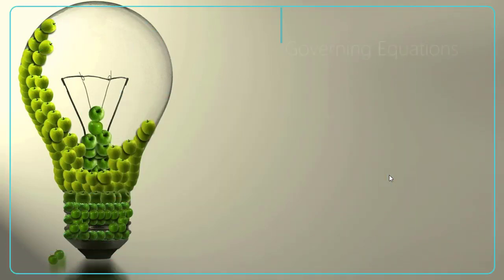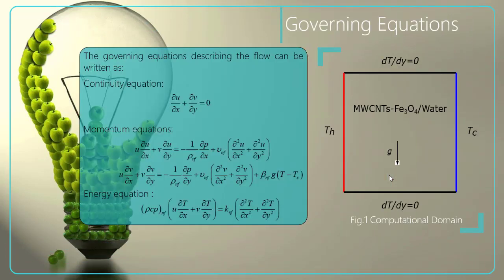Figure one presents the configuration. The enclosure was subjected to uniform constant temperature on the lateral walls where the right wall is the cold side and the left one is hot, while the lower and upper walls are assumed to be insulated.